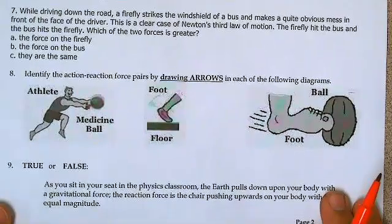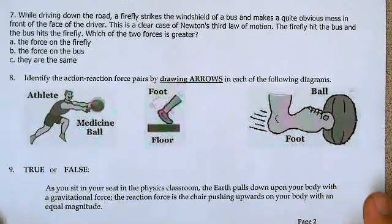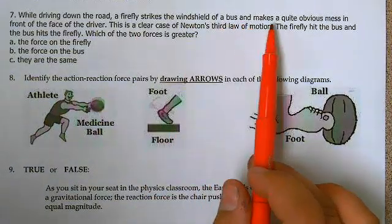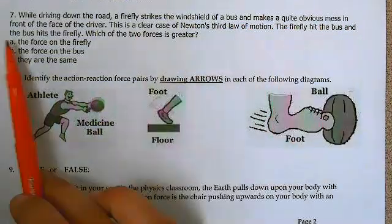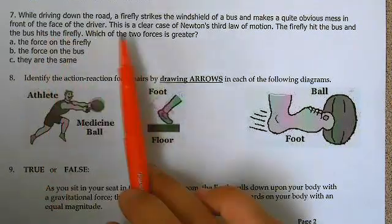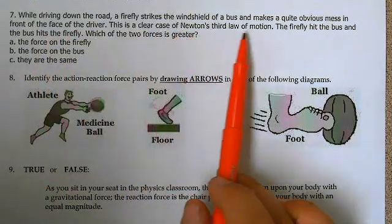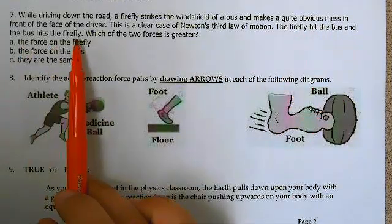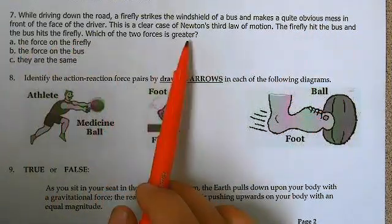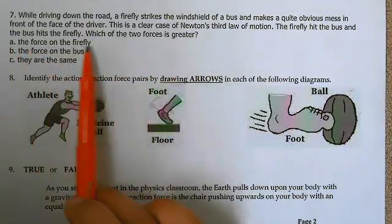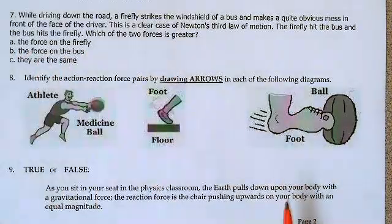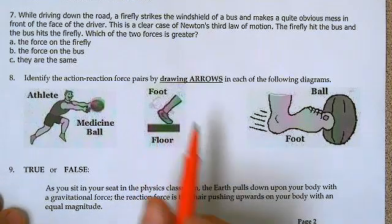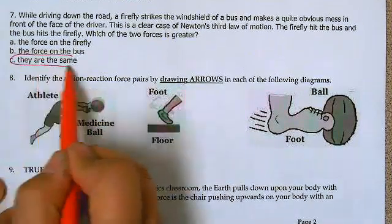Let's look at seven. While driving down the road, a firefly strikes the windshield of a bus and makes a quite obvious mess in front of the driver. This is a clear example of Newton's third law of motion — the firefly hits the bus and the bus hits the firefly. Which of the two forces is greater: the force on the fly, the force on the bus, or are they the same? Remember, Newton's third law says they're equal and opposite — that's going to be the same.